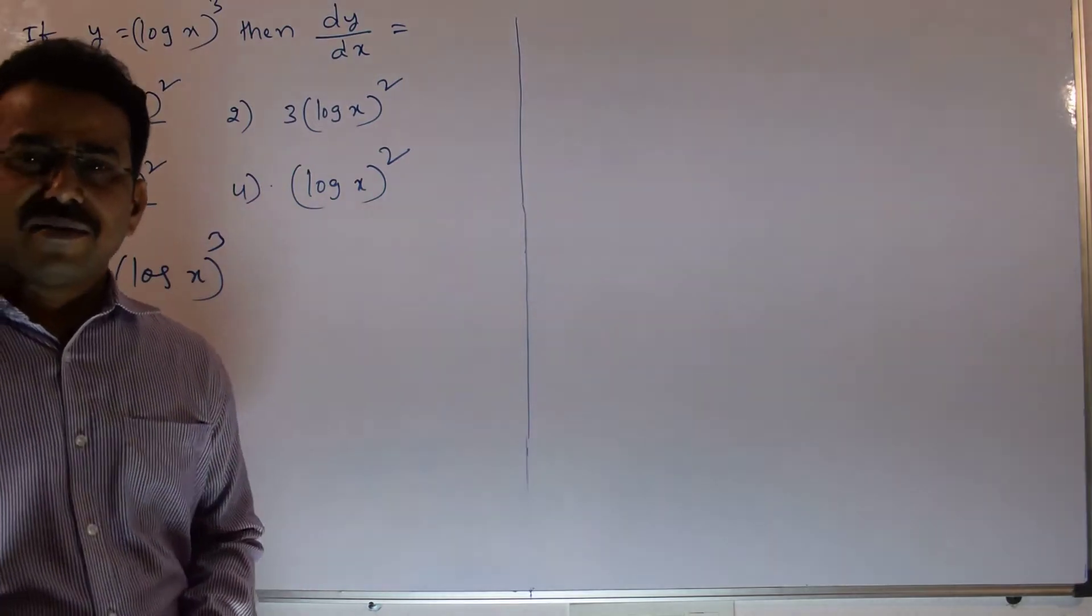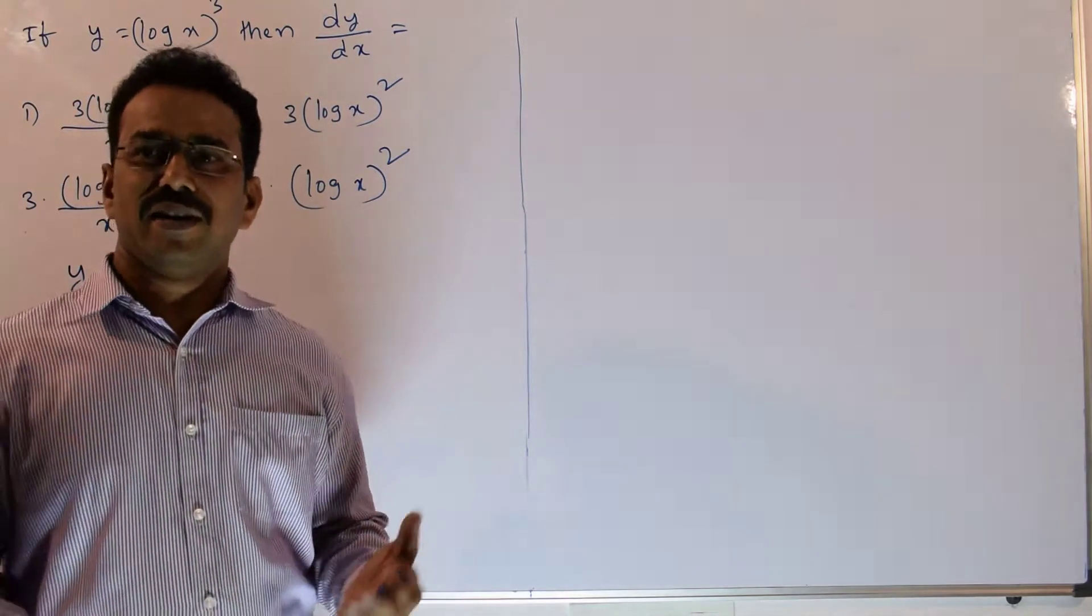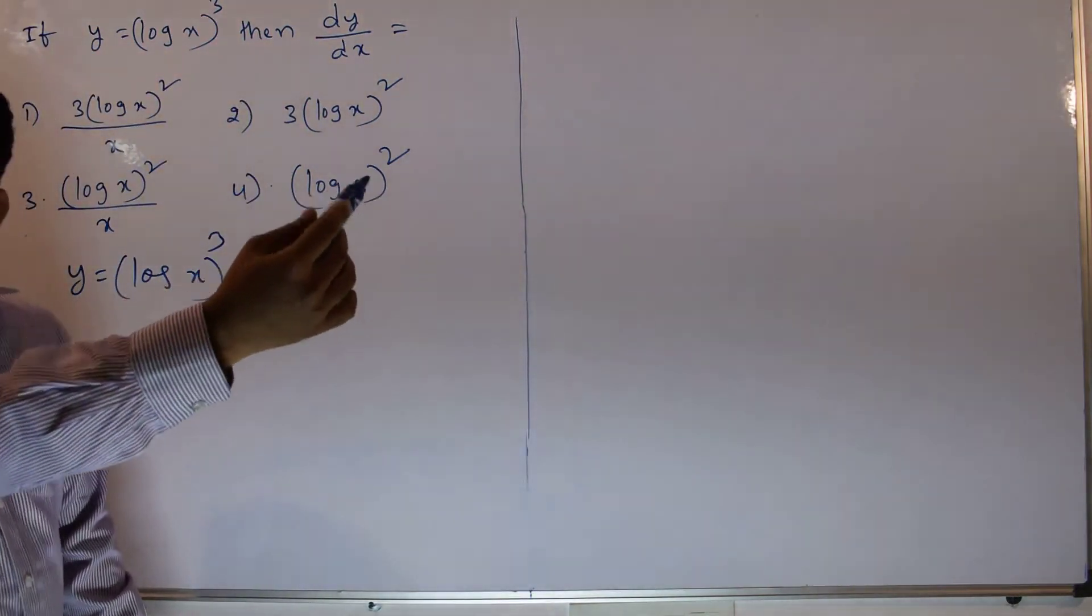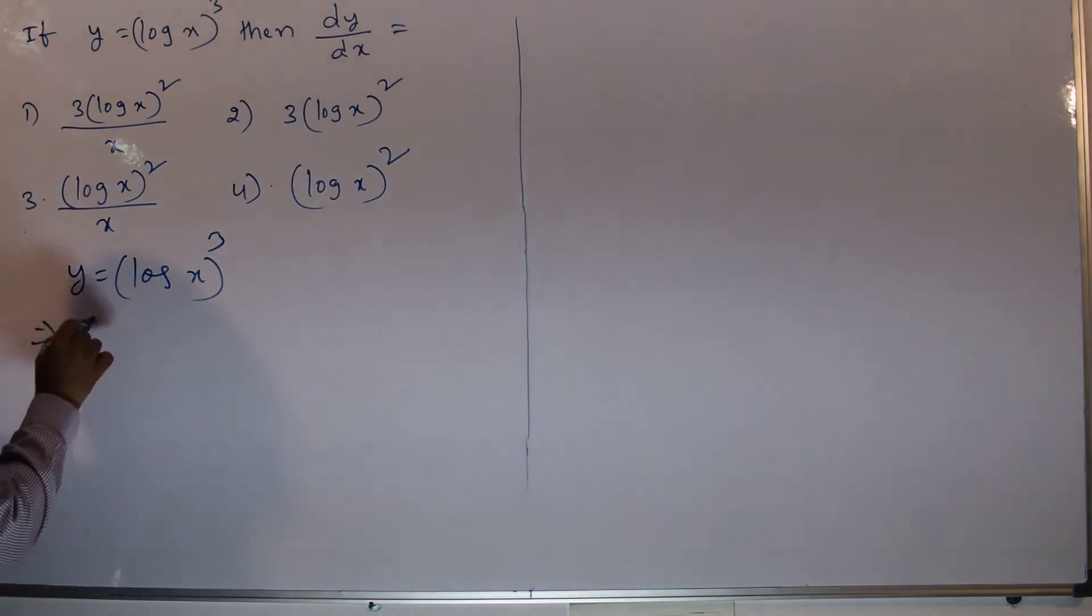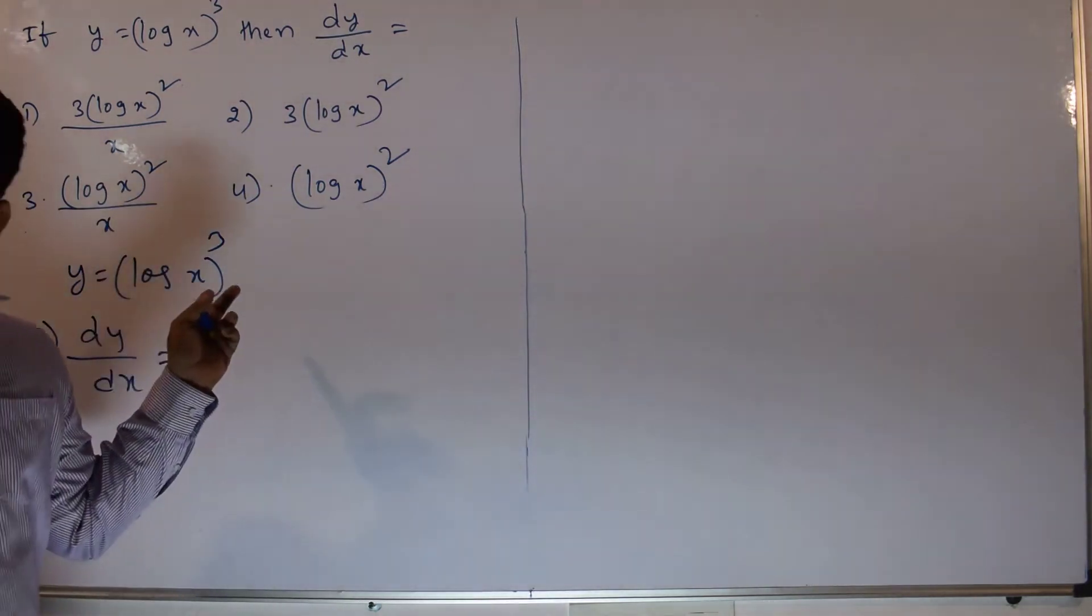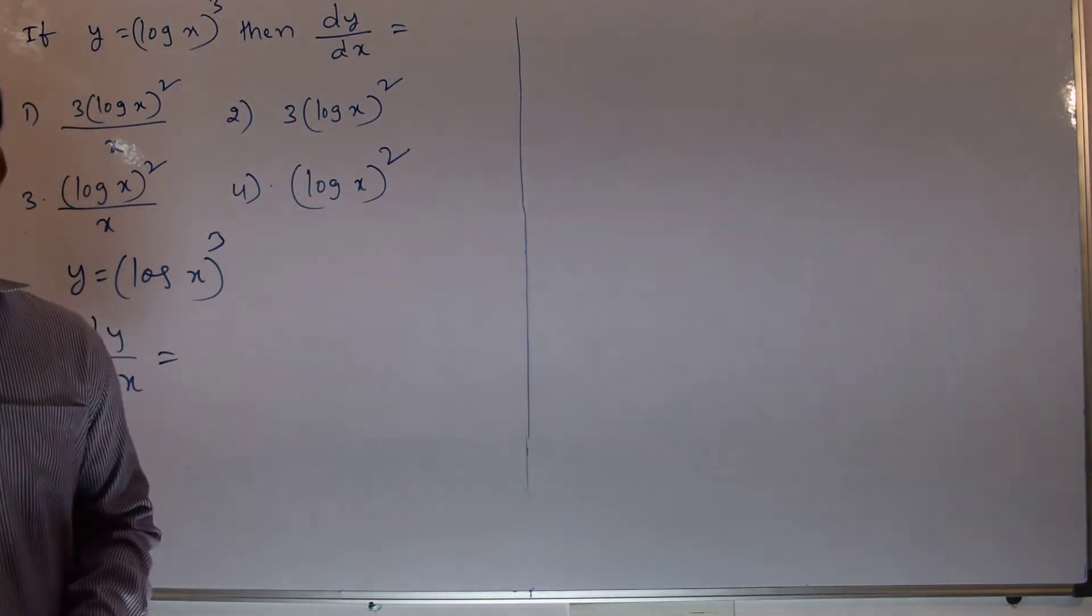Let me write one by one. Differentiate with respect to x on both sides. This implies dy by dx equals - which resembles x power n. The derivative of x power n equals n into x power n minus 1.